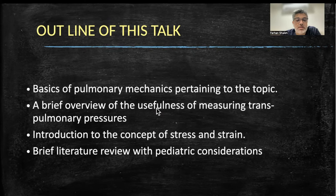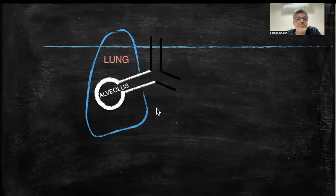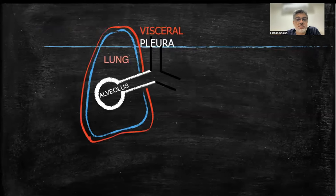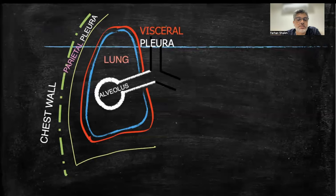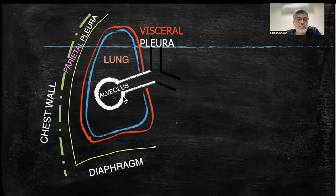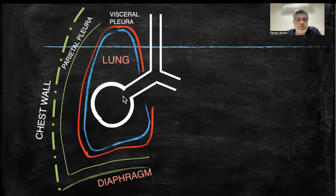And then a brief literature review for pediatric considerations. This is the schematic presentation of the lung and the alveolus. This is the visceral pleura, this is the parietal pleura, this is the chest wall which is adherent to the parietal pleura, and this is the diaphragm.